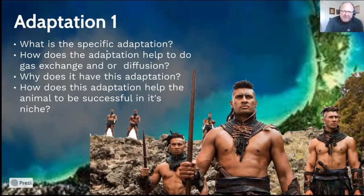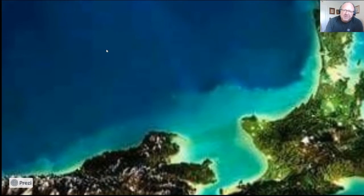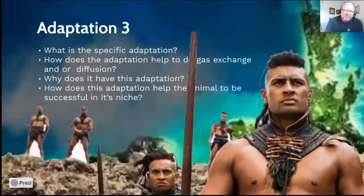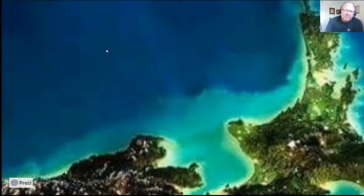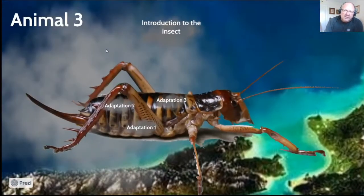That's the type of detail I want to see. Then for the mammal, Adaptation 1: specific adaptation, how does it help with gas exchange or diffusion, why does it have it, and how does it help? Same for all three adaptations.